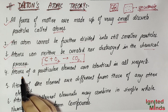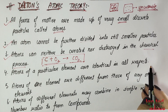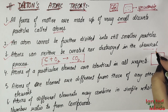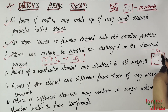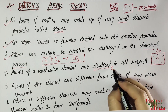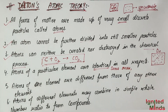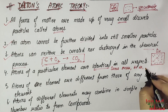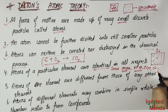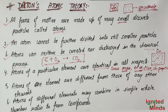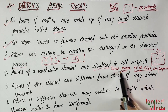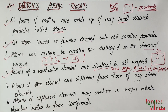The fourth postulate: atoms of a particular element are identical in all respects. This means that all oxygen atoms are identical to each other — they have the same mass, the same atomic number, the same size, and the same chemical properties. It is not the case that one oxygen atom has a different size from another. All atoms of the same element are identical in mass, atomic number, size, and chemical properties.